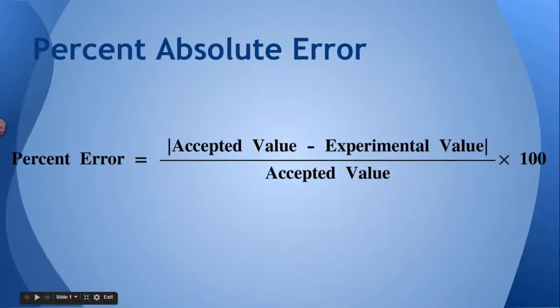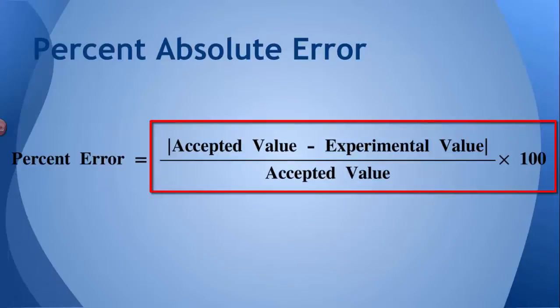Finally, you might want to take some values or measurements or calculated answers and compare them to what is the quote-unquote right answer. In chemistry, we call that the accepted value. It's the value that everybody kind of accepts as the right answer. Well, if you want to compare your value, something that you got out of an experiment, with the right answer, the accepted value, you can use this little calculation, which is technically called percent absolute error, but we often just shorten that to percent error.